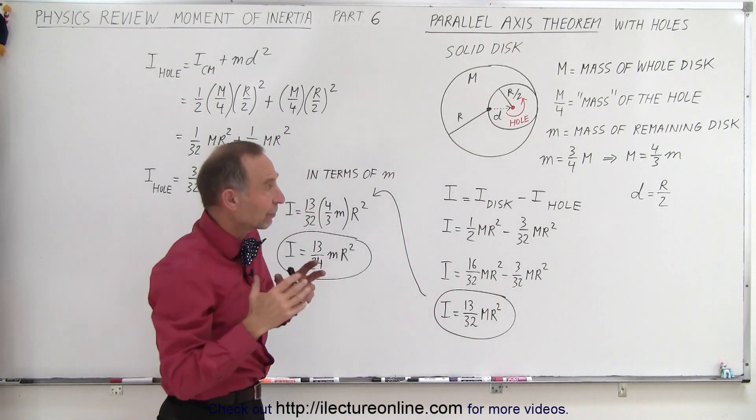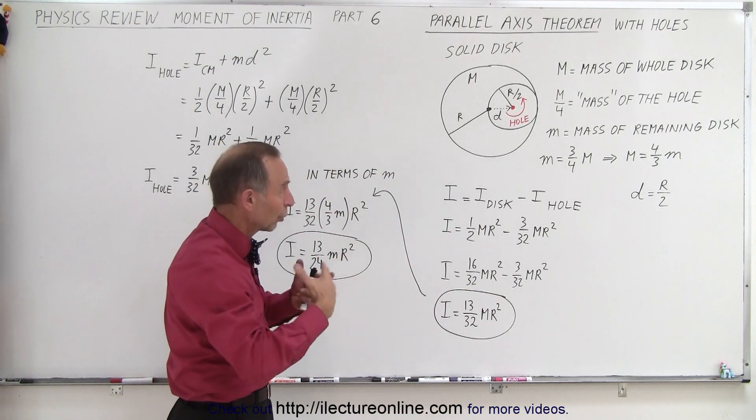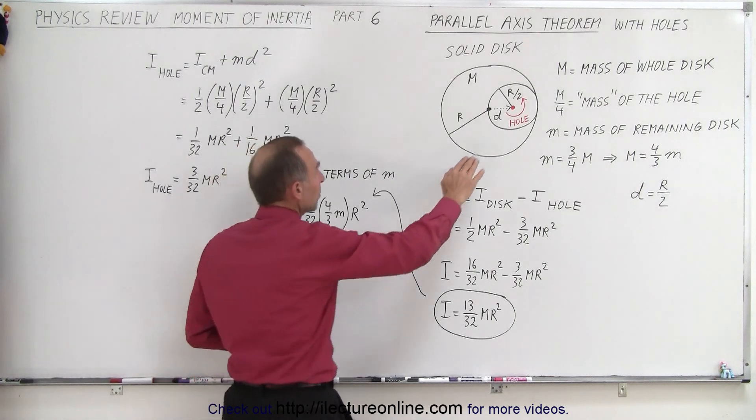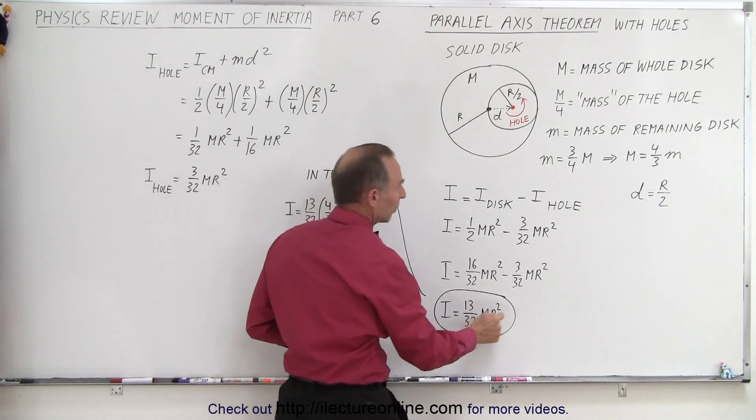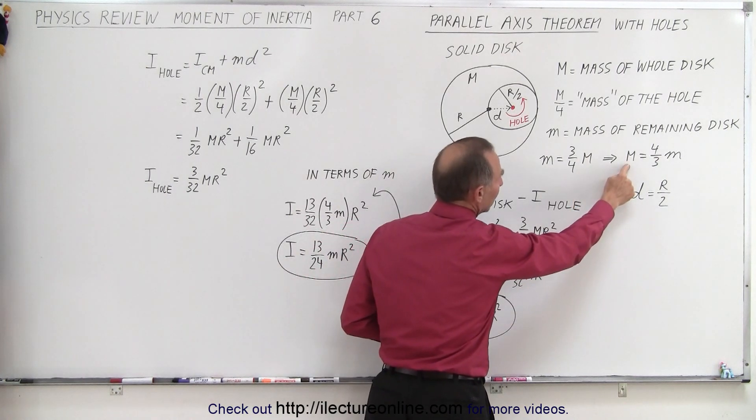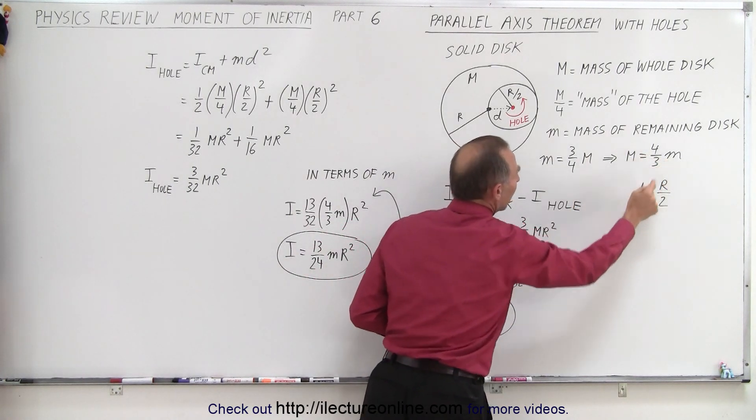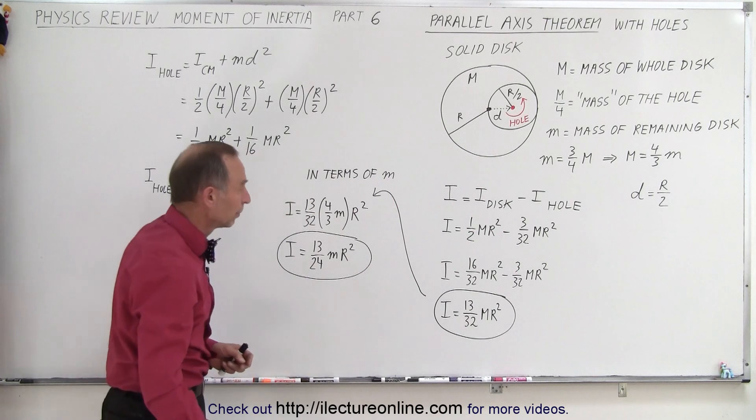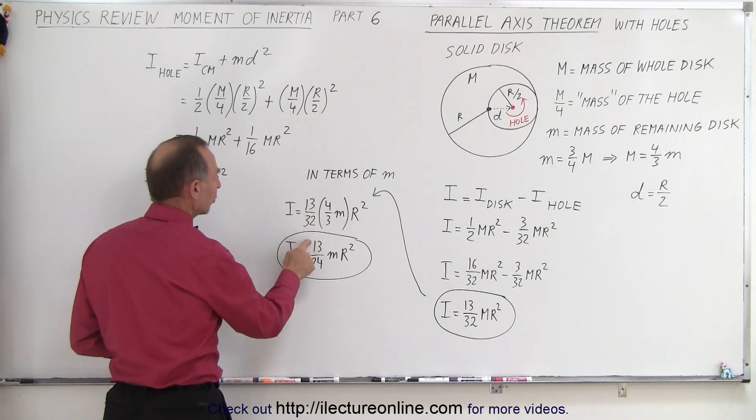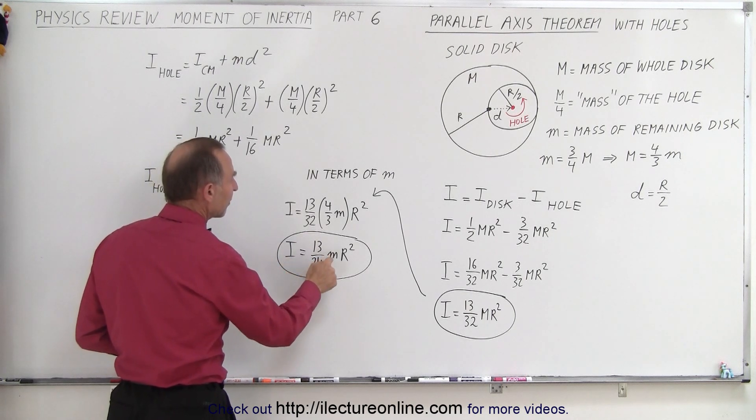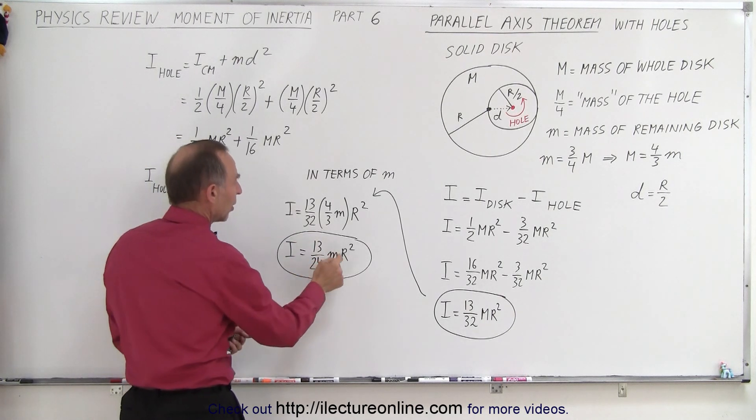If you want to convert that to the mass of the disc with the hole present, we take the remainder of that object and its mass. We have to make the substitution where big M, the mass of the disc without the hole, is 4/3 the mass of the disc with the hole. When we plug that in and equate that, we get the moment of inertia is 13/24 times the mass of the remainder part of the disc R squared.